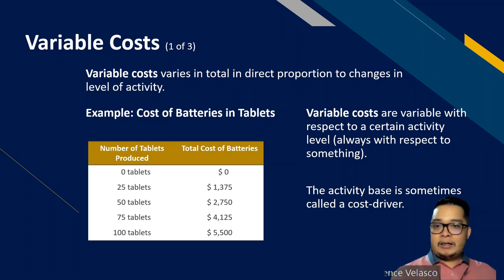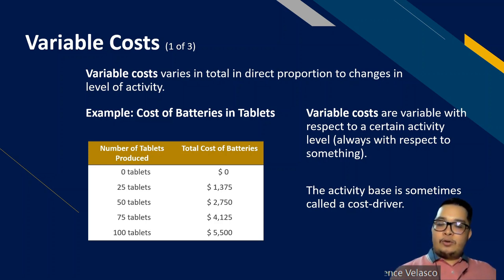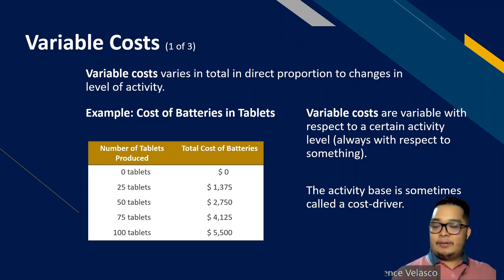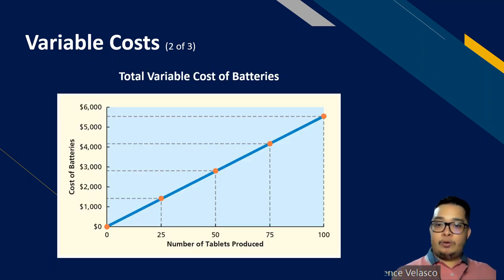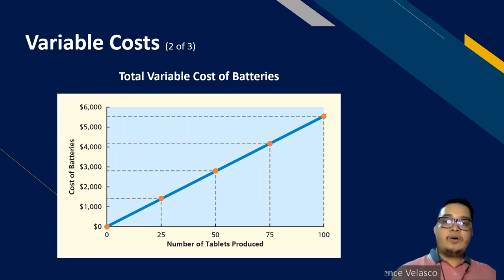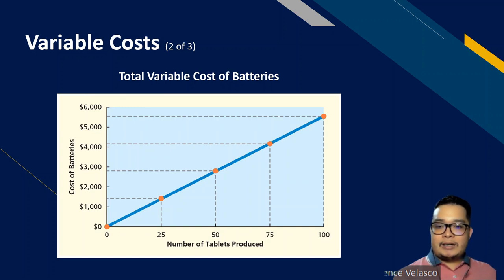For example, we have a hypothetical company selling tablets. As the number of tablets increases from 0 to 100, the total cost of batteries used goes from 0 to 5,500. We can see that as the activity level — number of tablets produced — increases, the total cost of batteries also increases. Graphically, if we plot total tablets produced on the x-axis and cost of batteries on the y-axis, the relationship is a straight line, and when there's zero production, there's also zero cost of batteries.